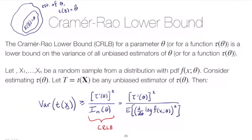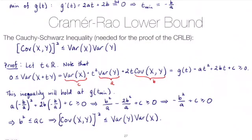We can go back a few slides to see the statement of the Cramer-Rao lower bound. We have a random sample from some distribution, and if we're estimating a function of theta using some function of the sample — say t of x — we're supposing that the estimator is unbiased. If we have an unbiased estimator, we have a lower bound on the variance. The proof will require an application of the Cauchy-Schwarz inequality, which is why we proved it in the previous video.